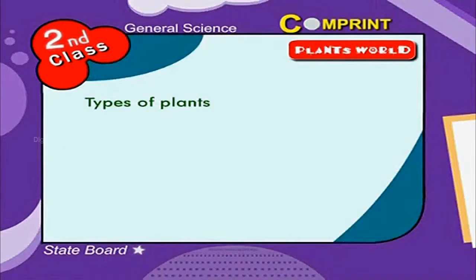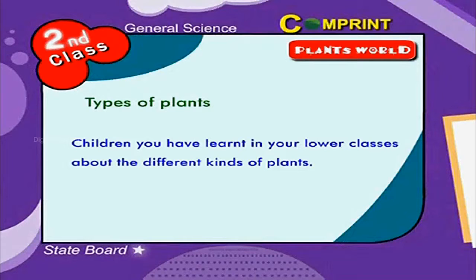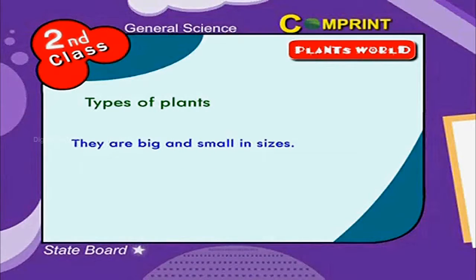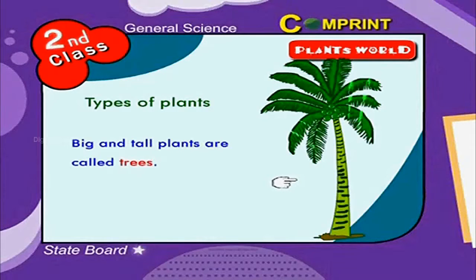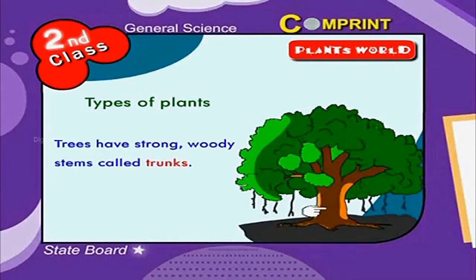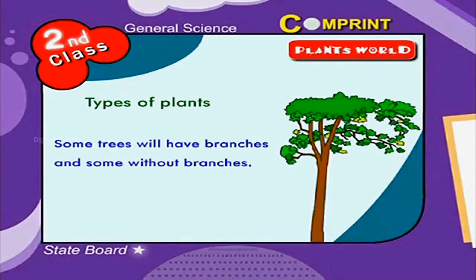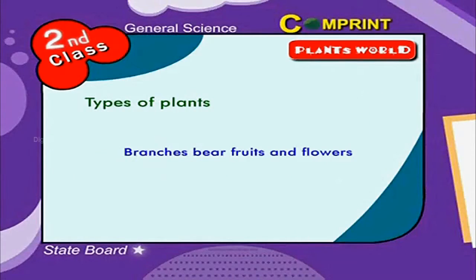Types of plants. Children, you have learnt in your lower class about the different kinds of plants. They are big and small in size. Big and tall plants are called trees. Trees have strong woody stems called trunks. Some trees have branches and some trees are without branches. Branches bear fruits and flowers.